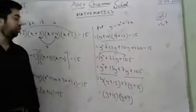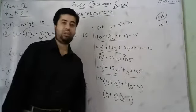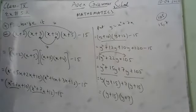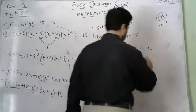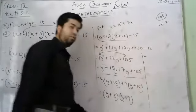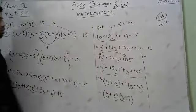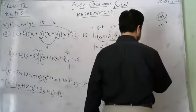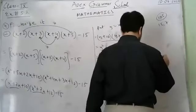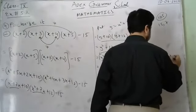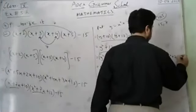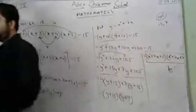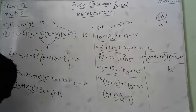Substituting back y equals x² plus 7x, the final answer is (x² plus 7x plus 15)(x² plus 7x plus 7). That completes question 4 part 3. Part 4 follows the same method.